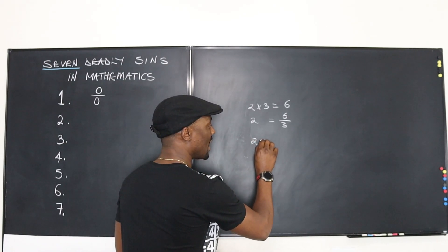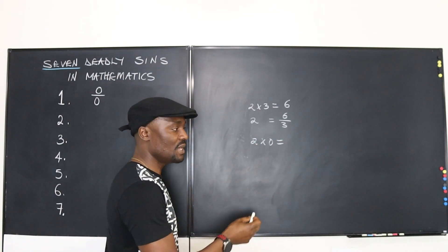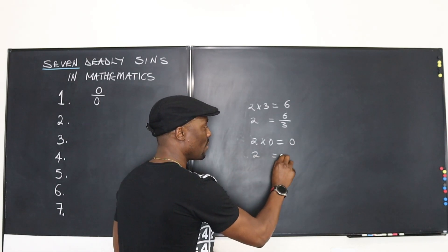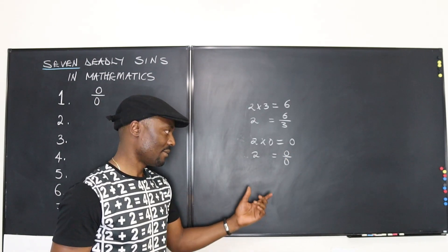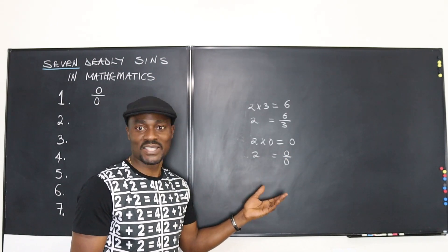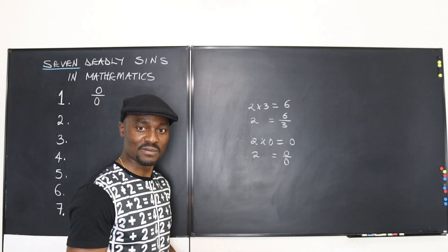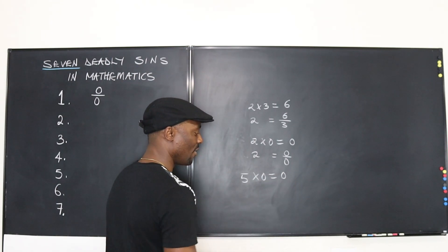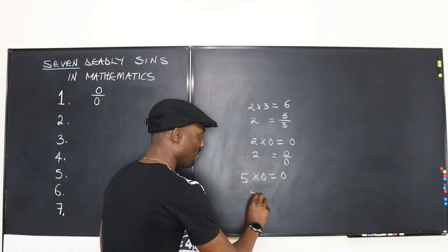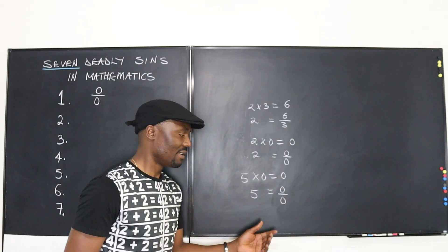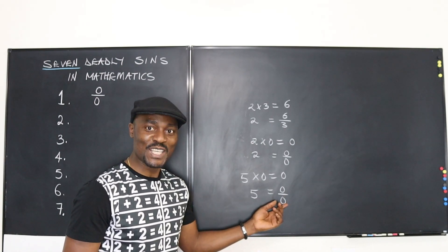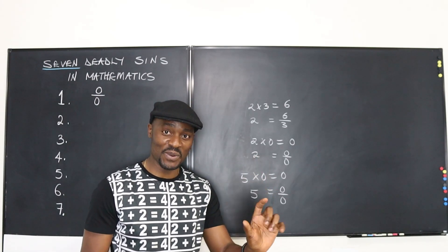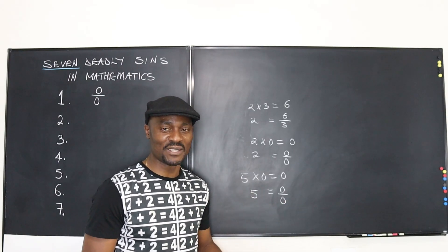But let's say I have two times zero — my answer is going to be zero. Now I want my two back, so I'm going to say two equals zero divided by zero. Well, let's even say that's true. What if the number is not two? What if the number was five? Five times zero gives me zero. I want my five back — my five is going to be zero divided by zero. So you see, I can make anything up. You cannot determine what zero over zero is because it can be anything you want it to be.